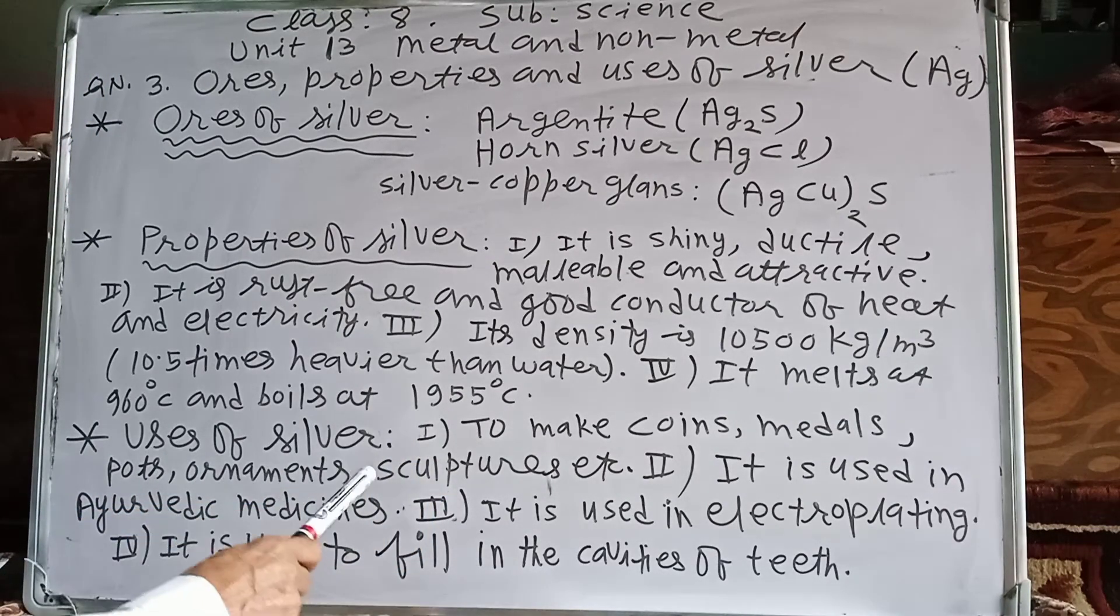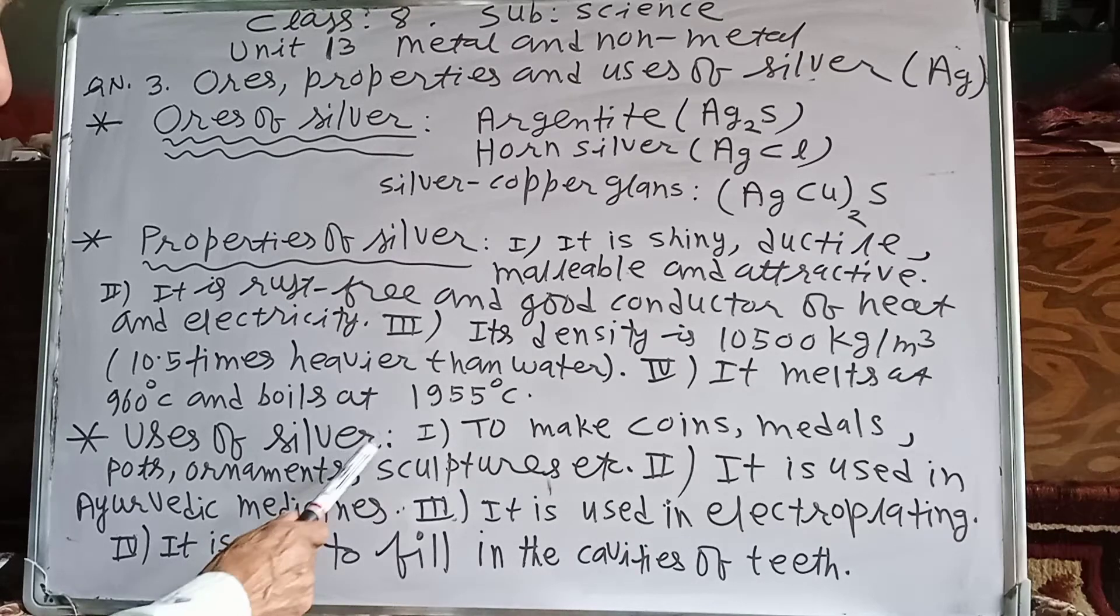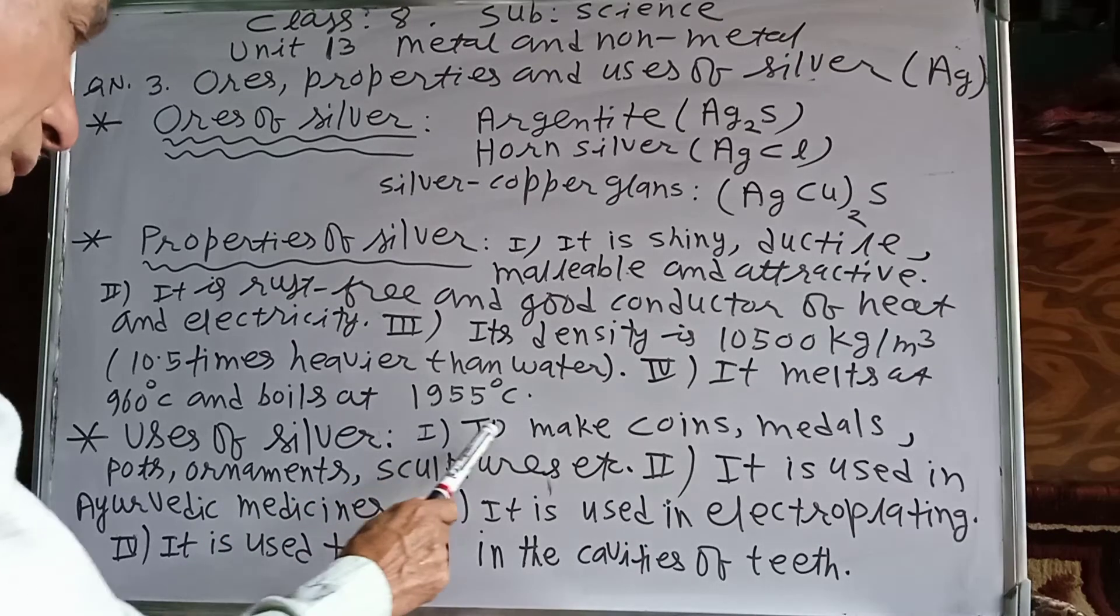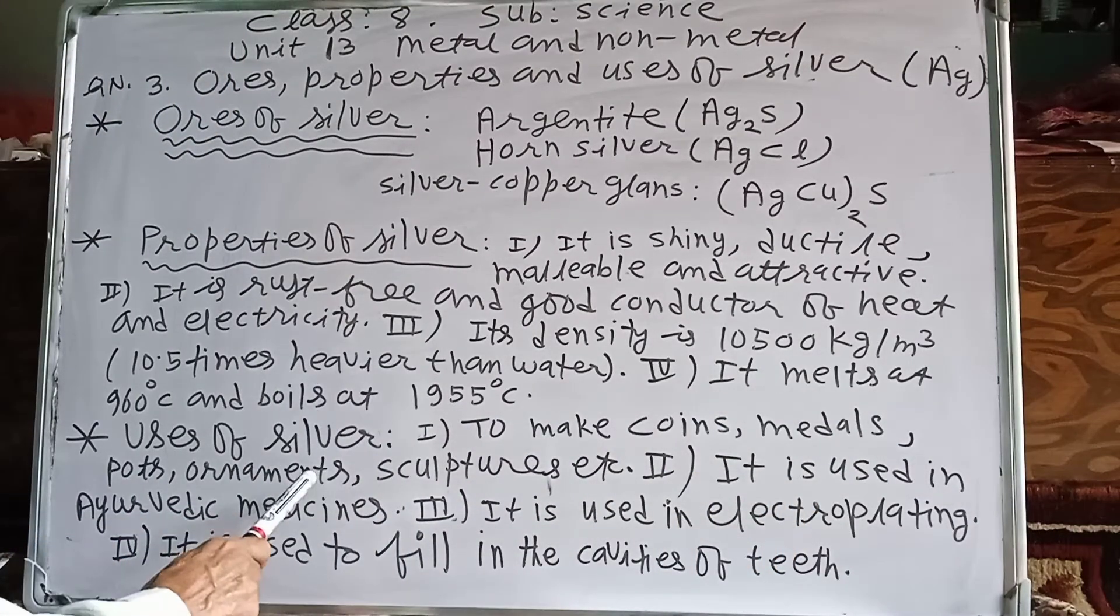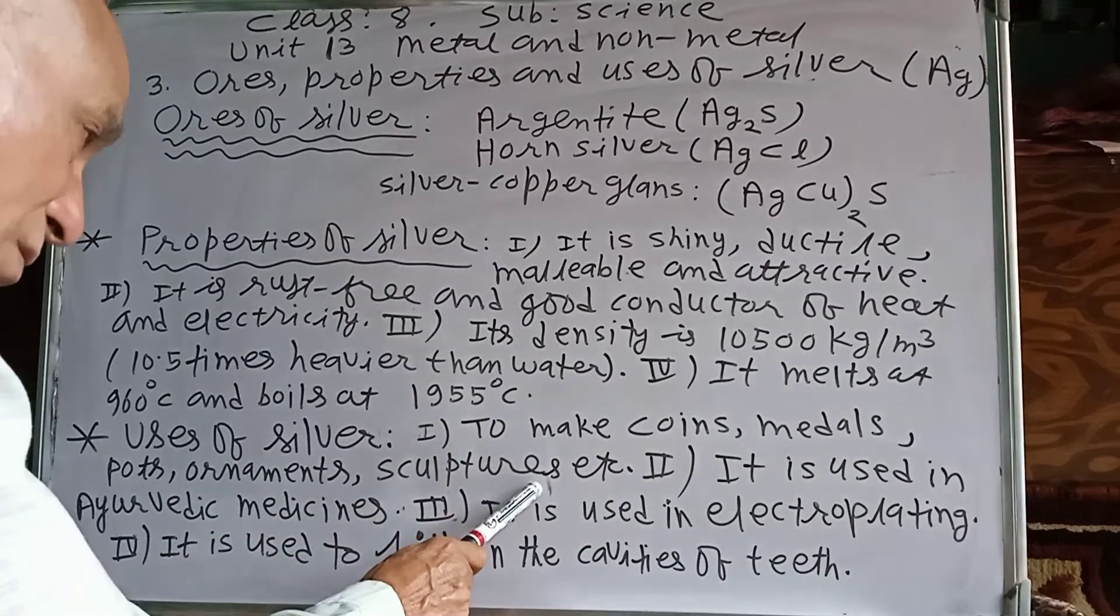Usage of silver. We know silver is very useful. Number 1, to make coins, medals, pots, ornaments, sculptures, etc.